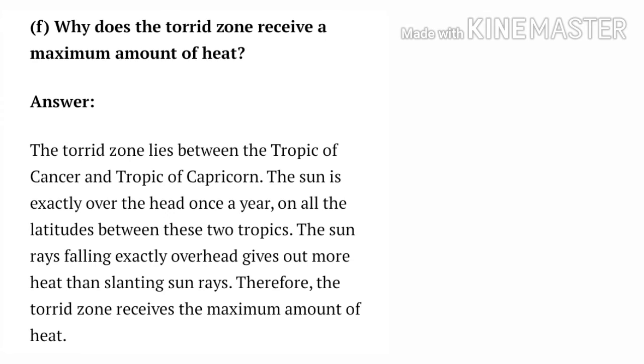Question number F: Why does the torrid zone receive a maximum amount of heat? Answer: The torrid zone lies between the Tropic of Cancer and Tropic of Capricorn. The sun is exactly overhead once a year on all the latitudes between these two tropics. The sun rays falling exactly overhead give out more heat than slanting sun rays. Therefore, the torrid zone receives the maximum amount of heat.